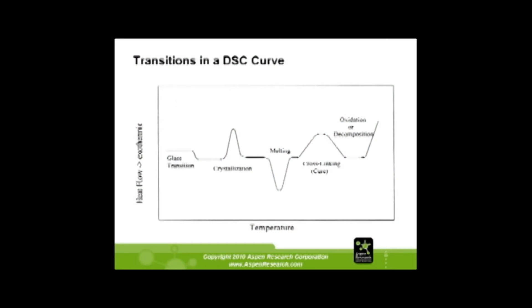Here are some different transitions. The first one here is a glass transition — that is an endothermic, it's going down. It's a reversible phase, so if you heat it, cool it, and reheat it again, it's going to be there. Crystallinity is also reversible. This is an exothermic: when the sample is melted and it's cooling down, it recrystallizes, so it gives off its heat — that's an exothermic.